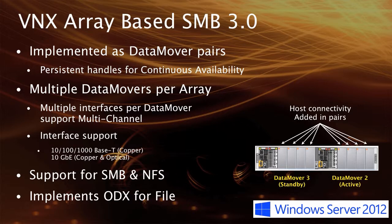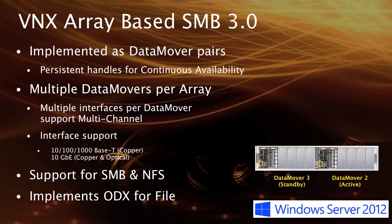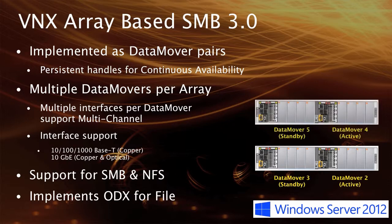A special implementation done by the file services team is to provide ODX services for file. If you, as a consumer of the SMB 3 protocol, were to copy a file from one file share to another, the data mover itself will implement ODX operations rather than doing read-write operations over the network, which can congest the network itself. There's also scalability through the addition of multiple data movers — added in pairs by default. The VNX unified platform is scalable, and how many data movers you can add depends on the specific model.